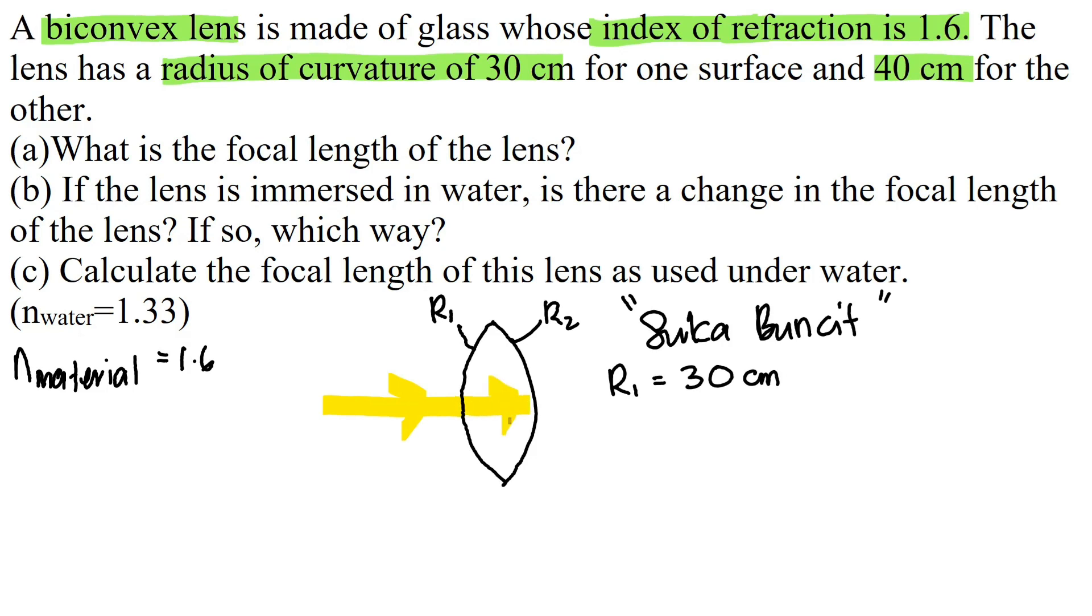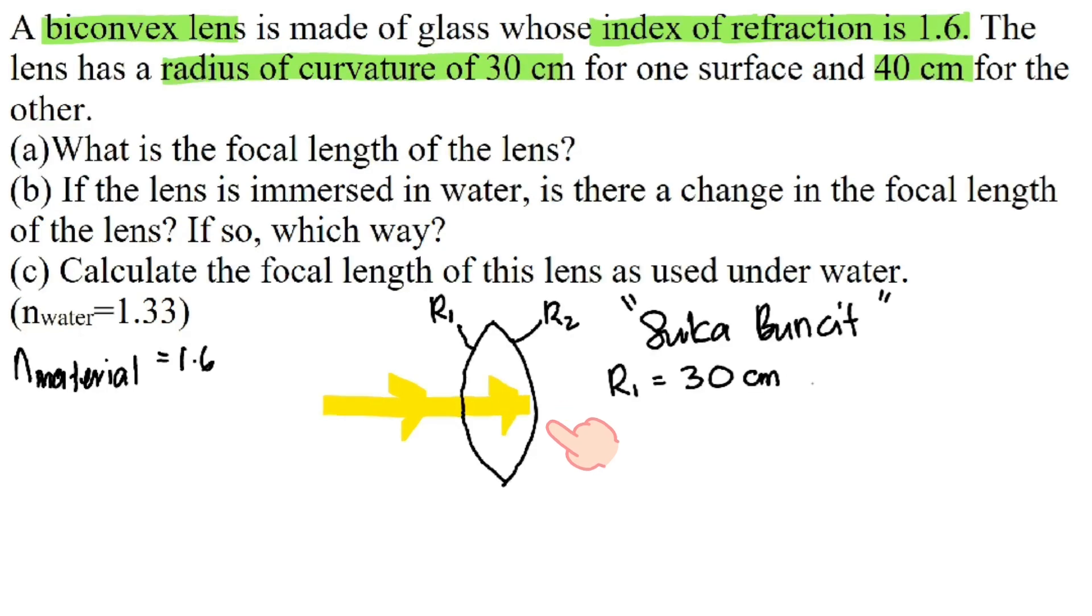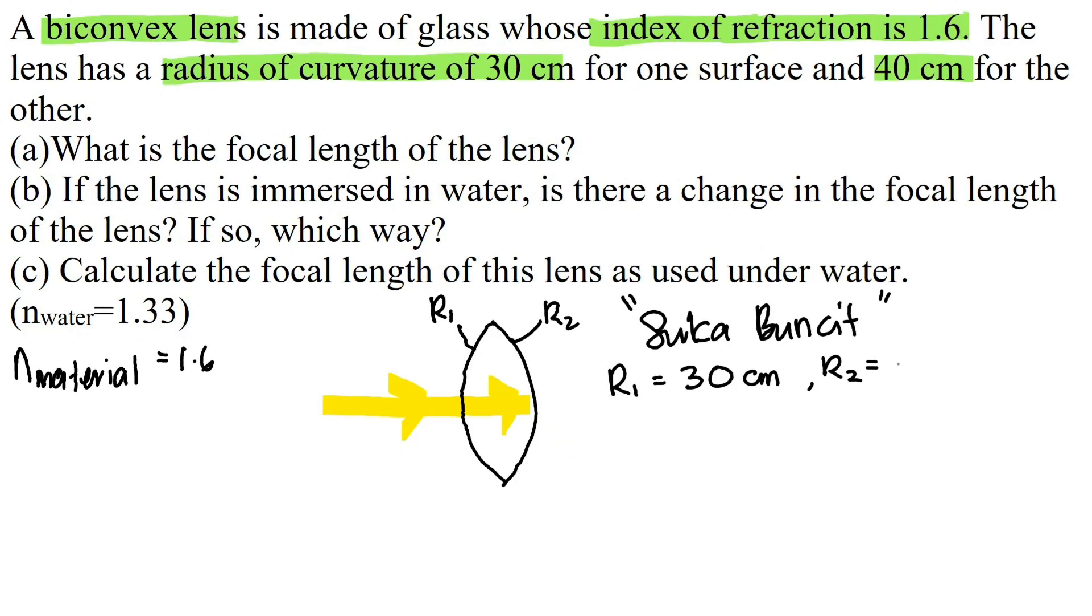But as it moves further to R2, the ray is now touching the kurus surface. Hence R2 is negative 40 cm.